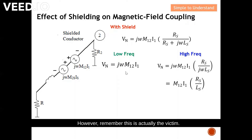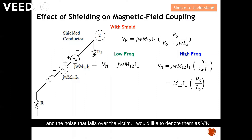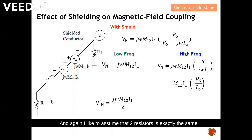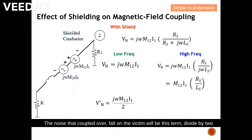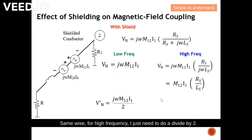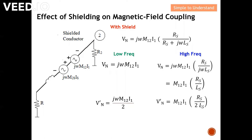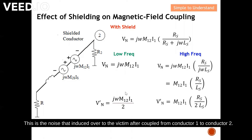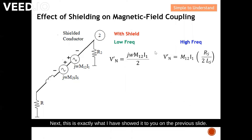This is the noise that couples over, called Dn. The noise that falls over the victim I denote as D'n. Assuming the two resistors are exactly the same, I simplify the equation. The noise that couples onto the victim will be this term divided by two, since the two resistors are assumed to be the same. Likewise for high frequency, I divide by two. This is the noise induced on the victim after coupling from conductor 1 to conductor 2.